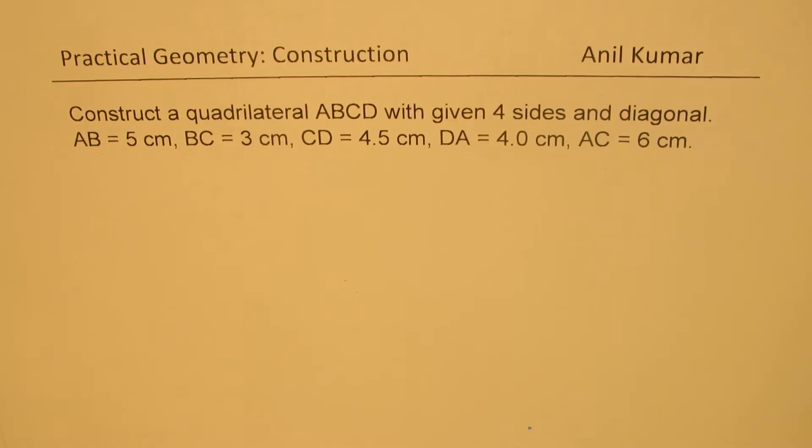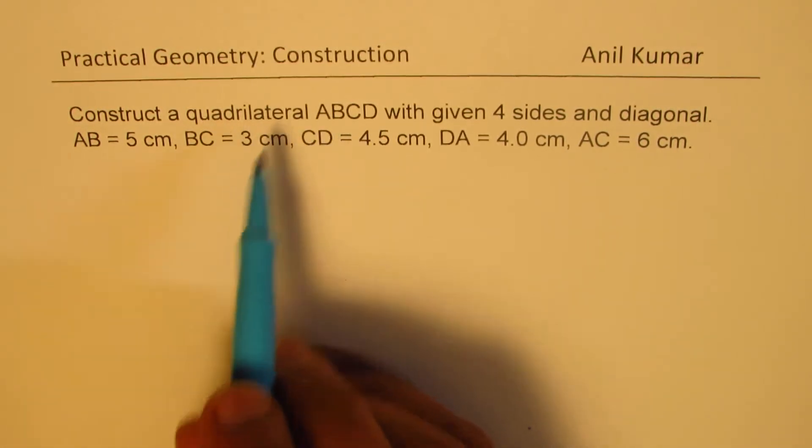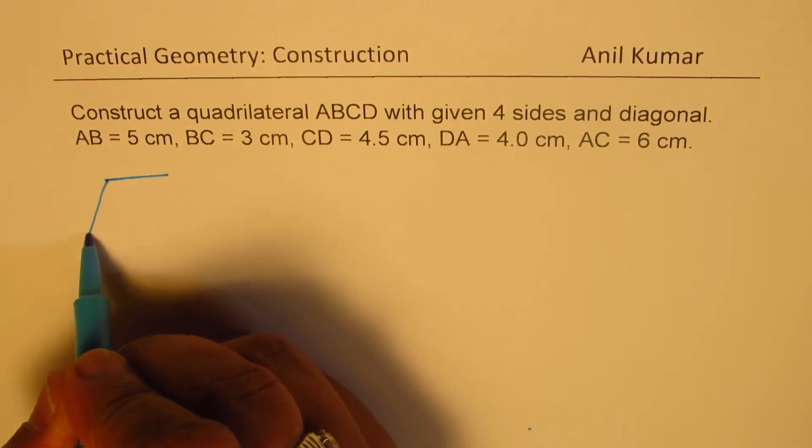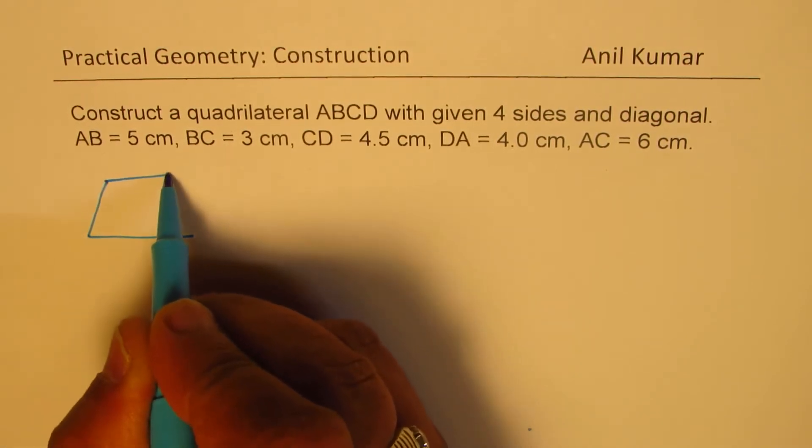Now first and foremost we should understand what we are trying to look at. ABCD is the quadrilateral, so let me just construct one quadrilateral here. This is not the actual diagram, this is just a rough sketch.